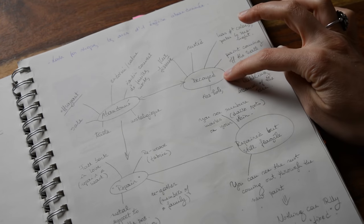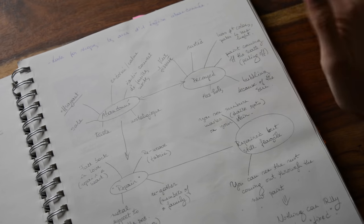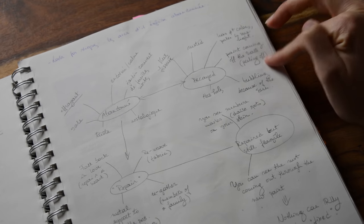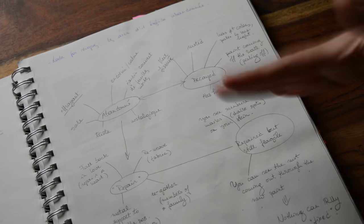Decayed and damaged could mean it has holes, that it has rust, it could be paint coming off the wall, and so on — I keep going until I run out of ideas. At that stage, don't censor yourself, just write down anything onto paper that comes to your mind. Usually I do that for about 10 minutes, after that my brain starts to get slower.